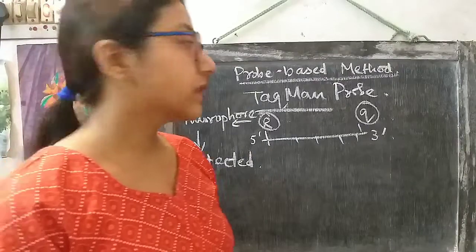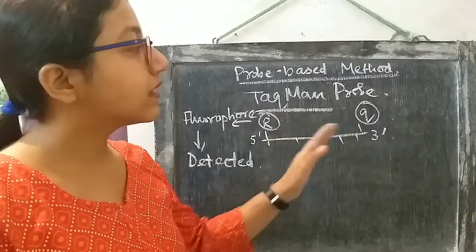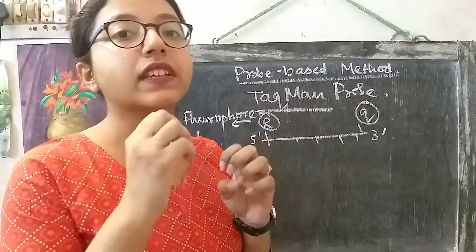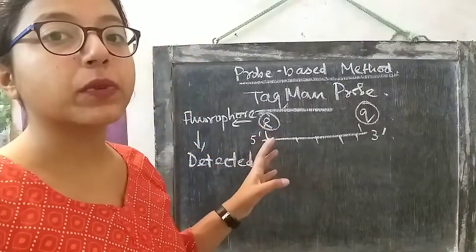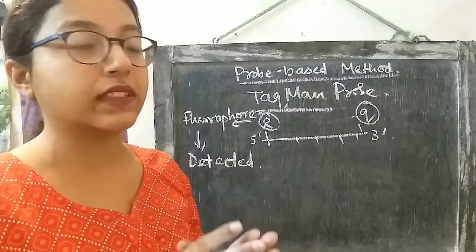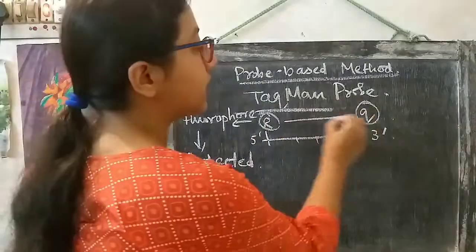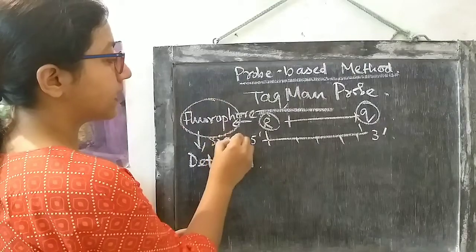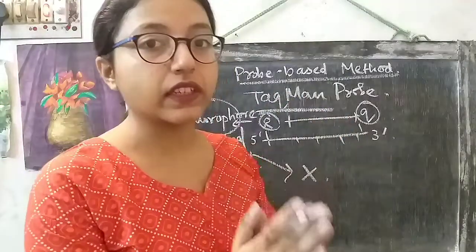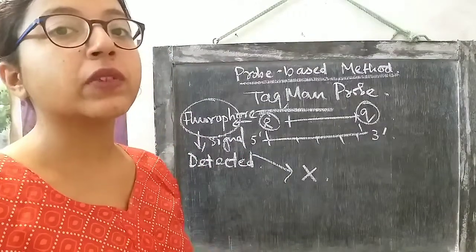And what is the function of the quencher? This quencher molecule plays a very important role. When the quencher molecule is in close proximity to the reporter molecule, it will not allow the emission of fluorescence by the reporter. That means when they are within a certain distance, the quencher blocks the signal emitted by the reporter — no signal is produced. This characteristic of the probe actually helps in the detection of the DNA product, and we will look at how the process occurs.